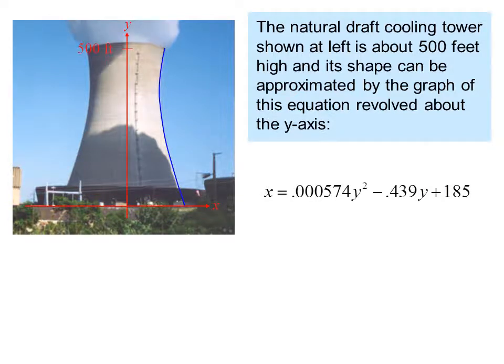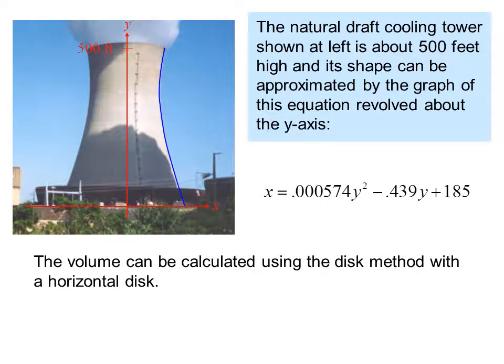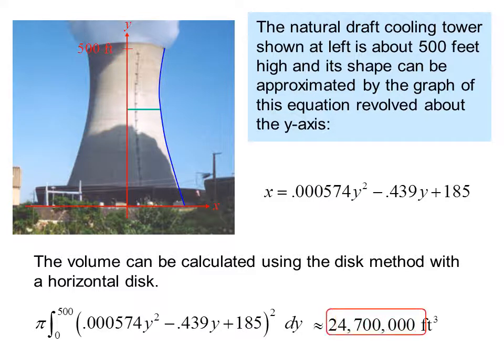If we enter our axis, the volume can be calculated using the disk method with a horizontal disk. So this is our integral. We integrate pi times the integral from 0 to 500. Then we have the expression for the radius, squared, dy. This time we use our calculator, and we get 24,700,000 cubic feet.